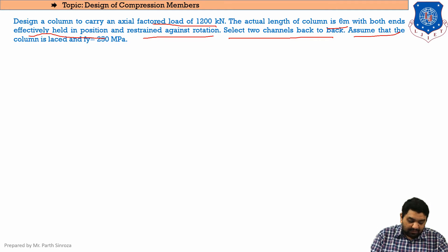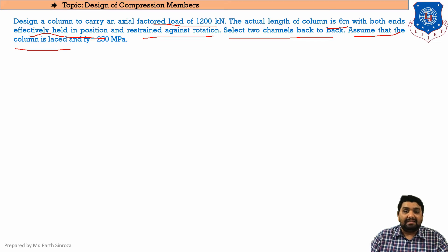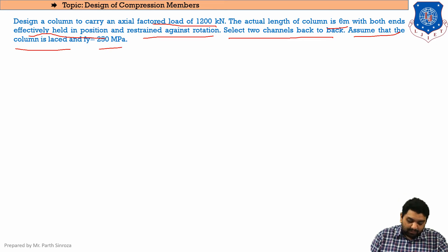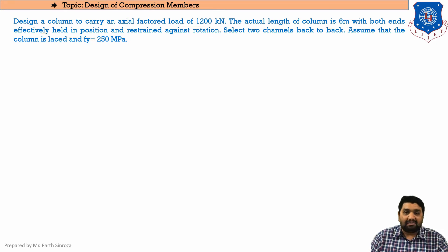The problem states to assume the column is laced. Lacings are provided whenever channel sections are used as columns. We will be designing this lacing plate in the next chapter; for now we simply assume a laced column is provided. The yield strength fy is taken as 250 MPa.